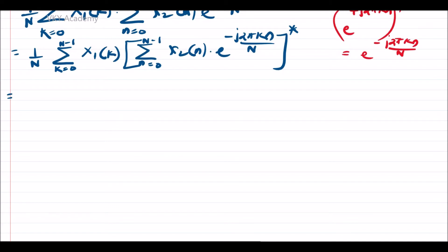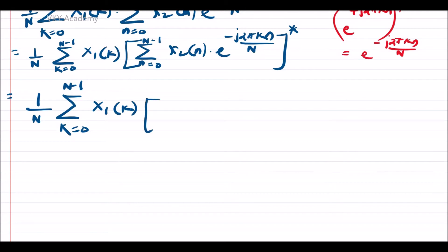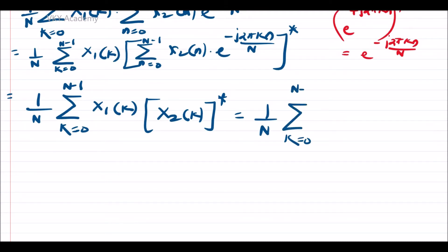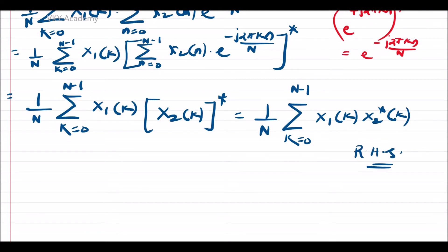So this can be written as 1/N summation k=0 to N-1 of X1(k) · [X2(k)]*, which is 1/N summation k=0 to N-1 of X1(k) · X2*(k). This is the RHS of my statement. Hence it is proved.